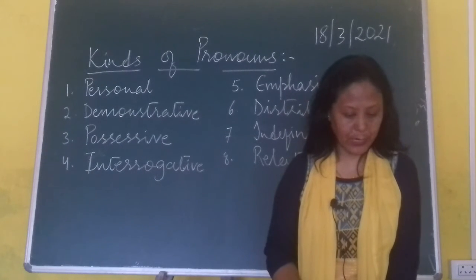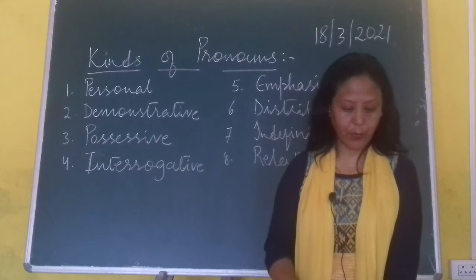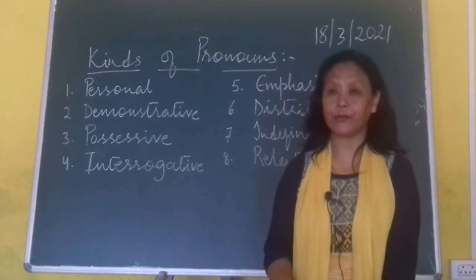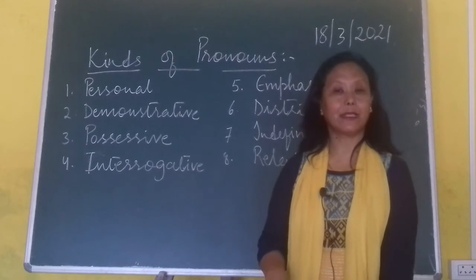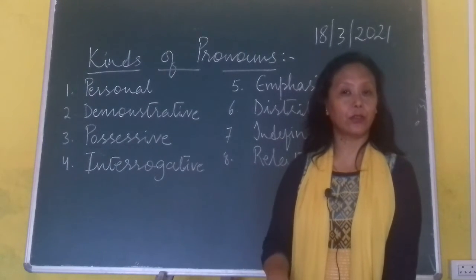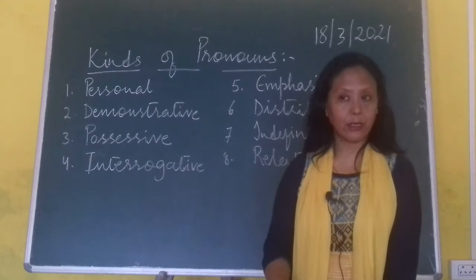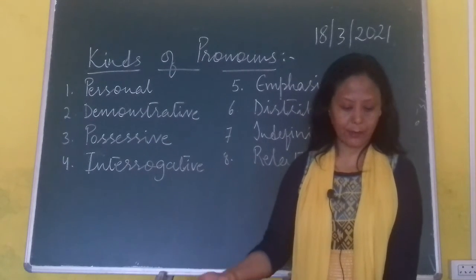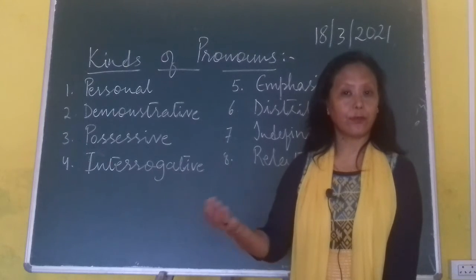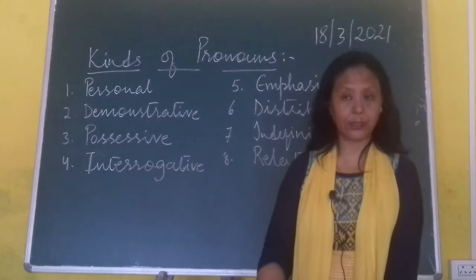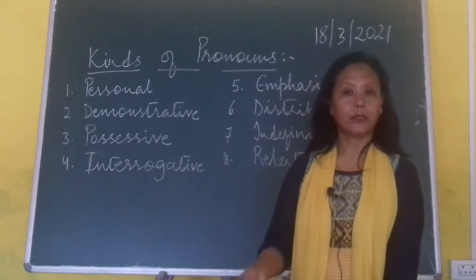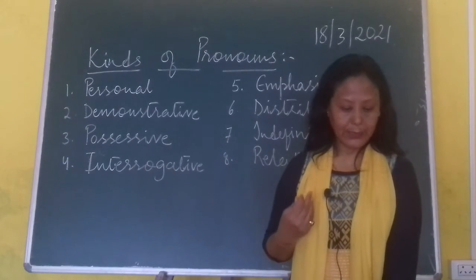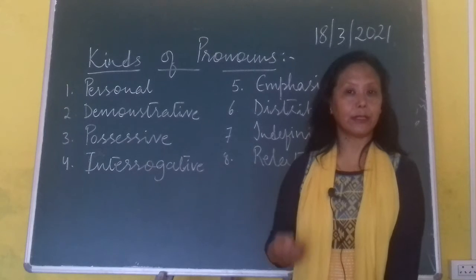Demonstrative pronouns refer to and point at the objects they refer to. This, that, these, those are all demonstrative pronouns. For example: this is a big house, those flowers are lovely, those colors are lovely. So this, that, those — it tells you about demonstrative pronouns.